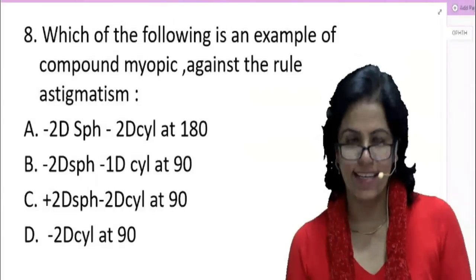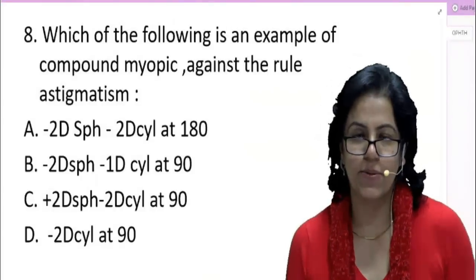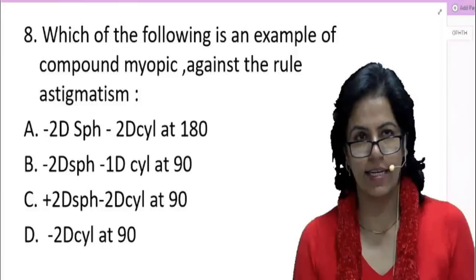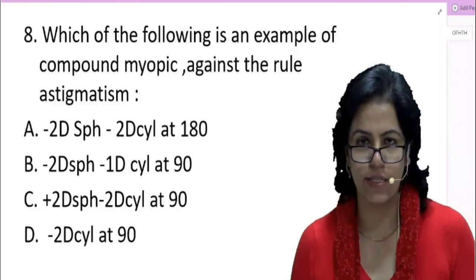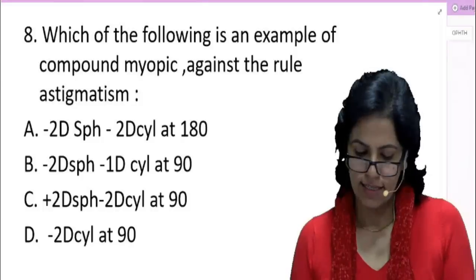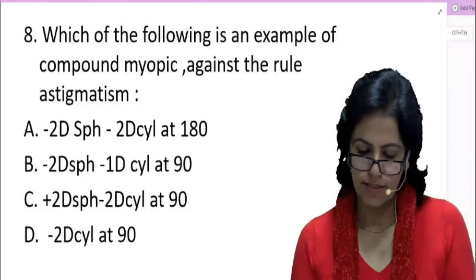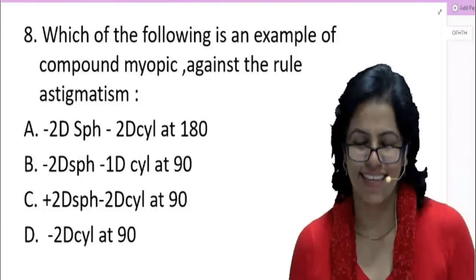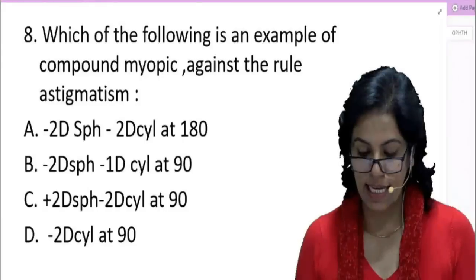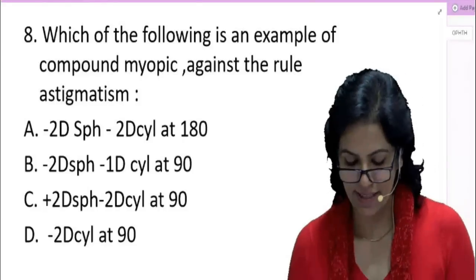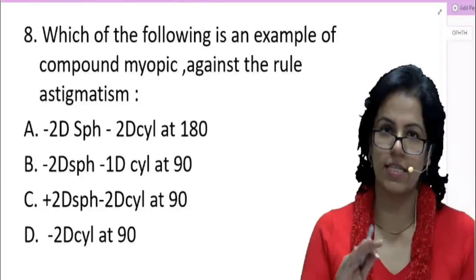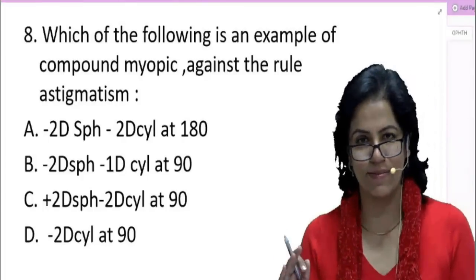Hello students, we are back with a very interesting and important question that was asked in the NEET exam very recently. Let's solve it: which of the following is an example of compound myopic against-the-rule astigmatism? So what is compound myopic? What is against the rule? What is astigmatism?